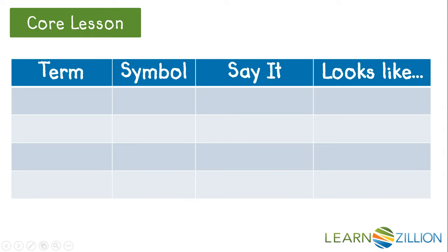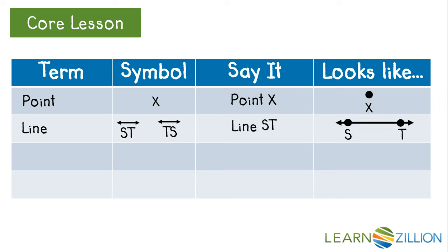Let's summarize everything we just learned with this chart. Now for a point, it can be any letter. We could call it point X, point B, point C. And it might look something like this. For a line, we could label it with any two letters we want, ST or TS. We could call it line ST or line TS. And it might look like this.